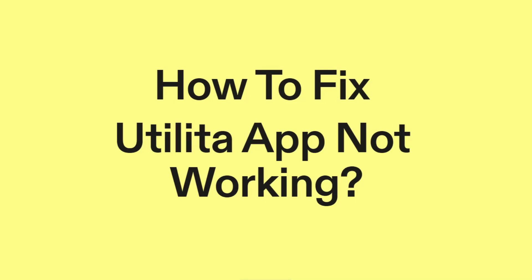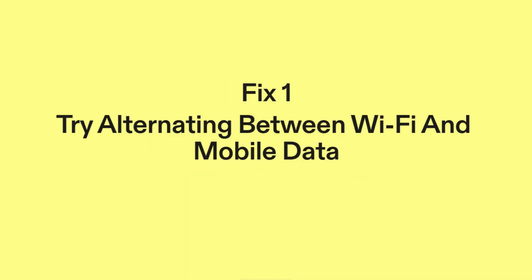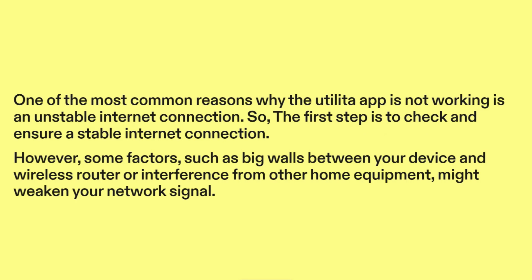How to fix Utilita app not working. Fix one: try alternating between Wi-Fi and mobile data. One of the most common reasons why the Utilita app is not working is an unstable internet connection. So the first step is to check and ensure a stable internet connection.